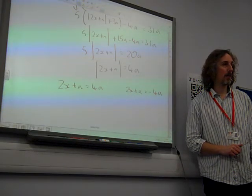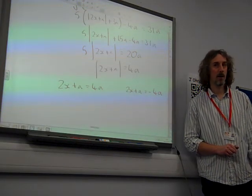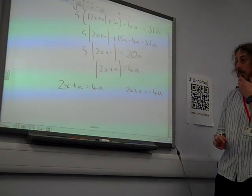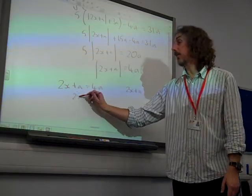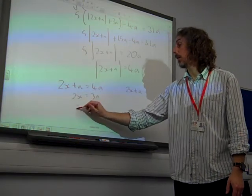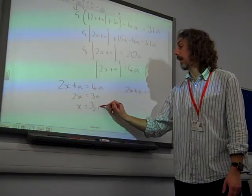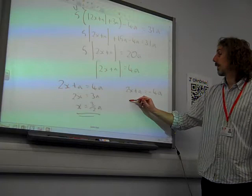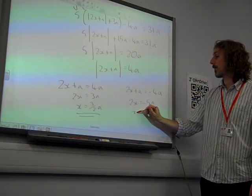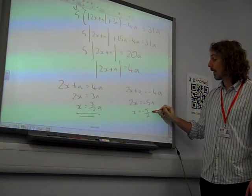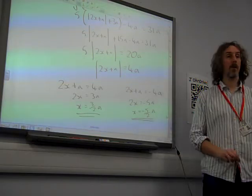Remember how we think about these if we draw the graph and do it that way? You could square things and do it that way as well. But this way is so much easier. x is 3 over 2a and there's one solution. 2x is minus 5a, so x is minus 5 over 2a is the other solution.